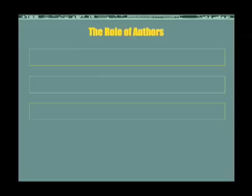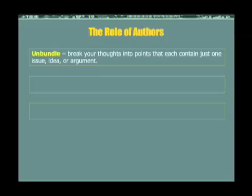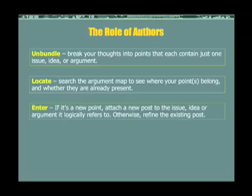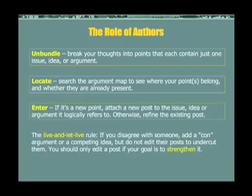So how do you use the Deliberatorium? The role of authors is first to unbundle your ideas into points that each contain just one issue, idea, or argument. Next, you search the argument map to see where your points belong and whether they are already present. If it's a new point, attach a new post to the issue, idea, or argument it logically refers to; otherwise, just refine the existing post. Most importantly, follow the live and let live rule: if you disagree with someone, add a con argument or a competing idea, but do not edit their post to undercut them.